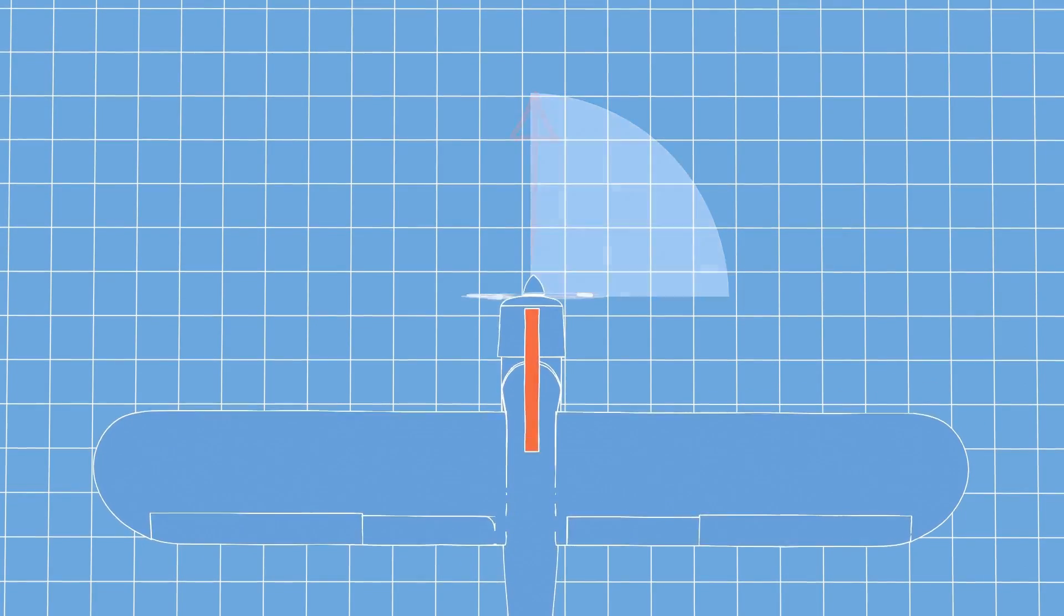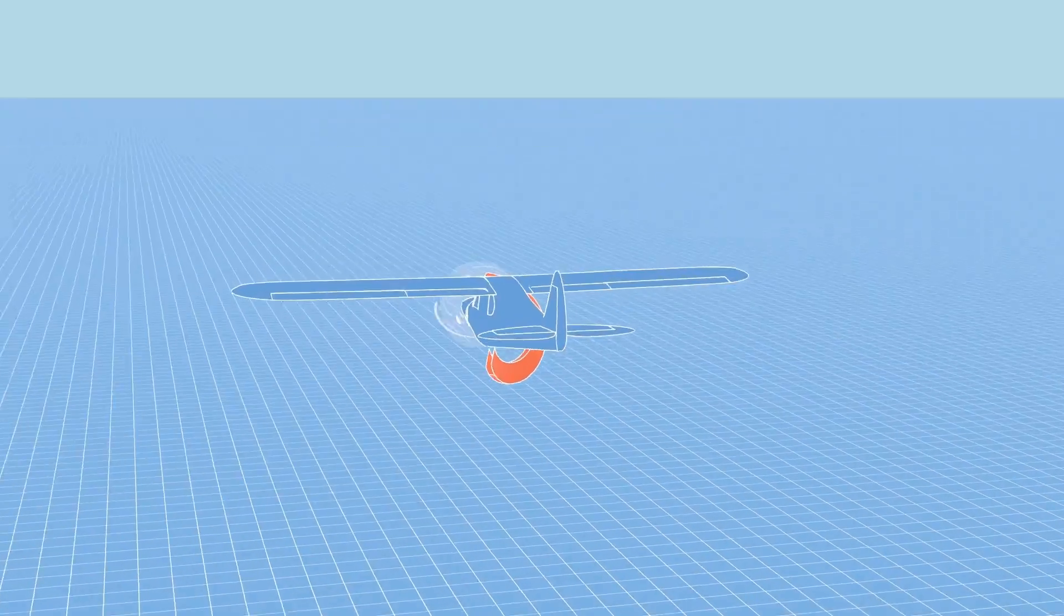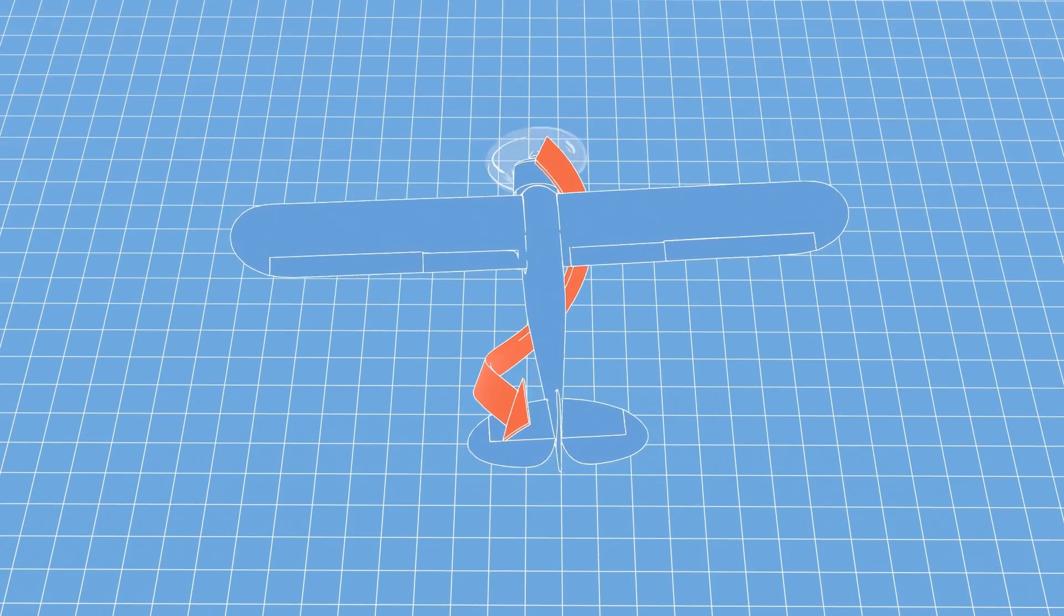The propeller doesn't push the air straight back, it also gives it a spin. The air twists around the body of the airplane until it hits the rudder and turns the plane to the left.